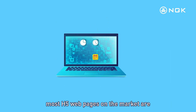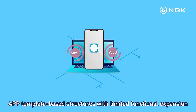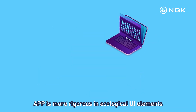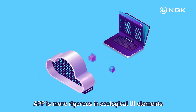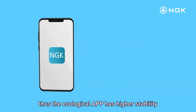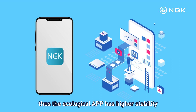Most H5 webpages on the market are app-template-based structures with limited functional expansion. The Ecological App is more rigorous in UI elements, data content, and logical framework, thus the Ecological App has higher stability.